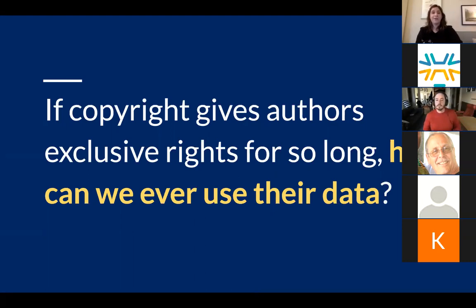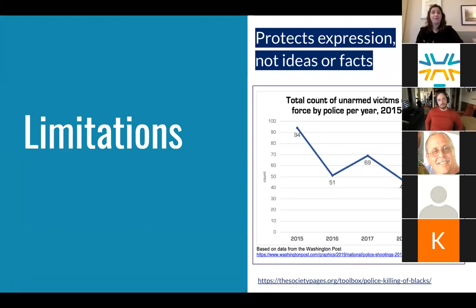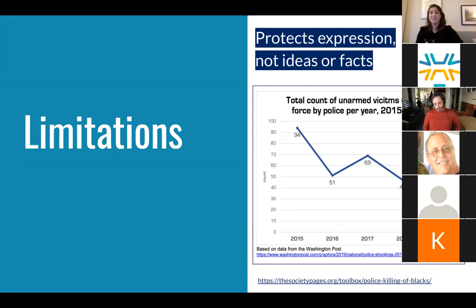How are we ever able to use anyone else's data if the exclusive rights last so long? Well, the boundaries of copyright when it comes to data are fairly limited. First of all, there are some crucial limitations on what copyright covers when it comes to data, because not all data is subject to copyright protection to begin with. Copyright only protects expression — not ideas or facts. You cannot copyright a fact, a statistic, or a method. Obviously you should still be citing your sources, but you don't need to ask permission to use them. For example, a simple graph charting over time the count of unarmed victims of lethal force by police: there is nothing about that graph or the underlying data that is protectable by copyright. Non-expressive data are just facts, and a line graph has no original expression.